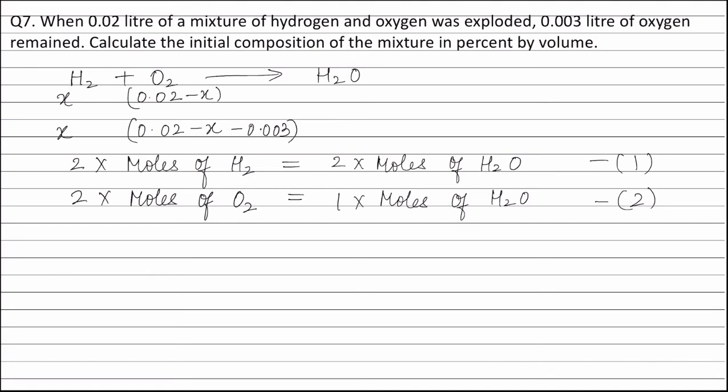Now, dividing equation 1 by equation 2 we get moles of hydrogen divided by moles of oxygen is equal to 2.